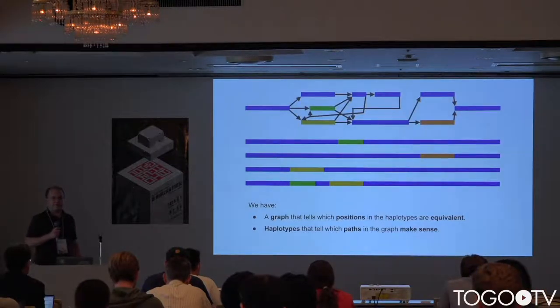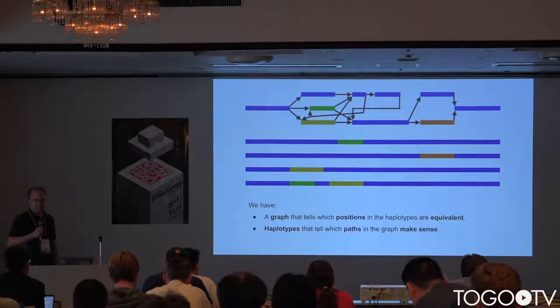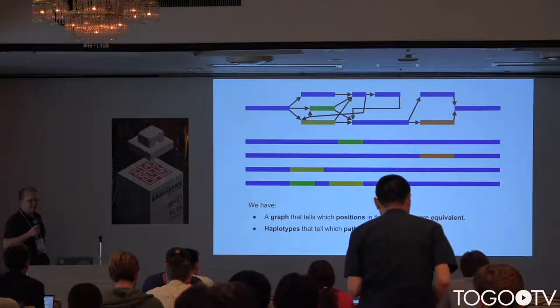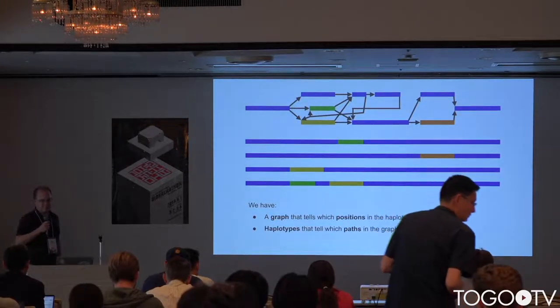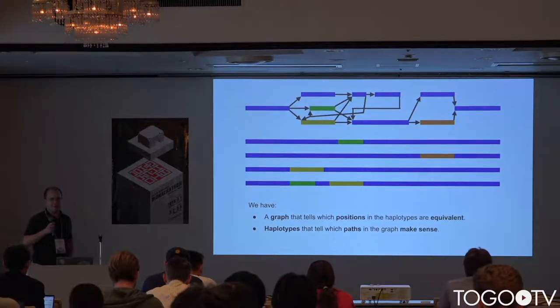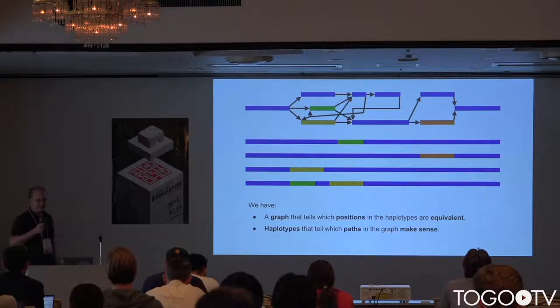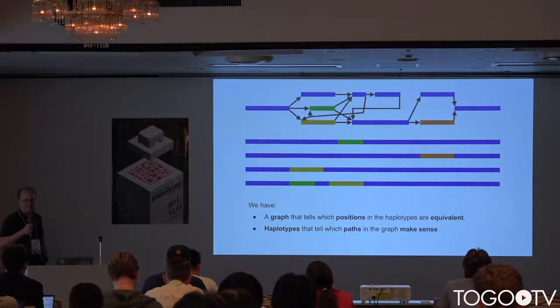The data model is a graph as an alignment of haplotypes. We have a graph that tells which positions in the haplotypes are equivalent, and we have the haplotypes that tell which parts in the graph make sense.